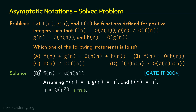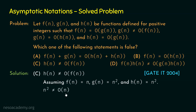Statement C: h(n) ≠ O(f(n)). Replacing f(n) = n and h(n) = n², we get n² ≠ O(n). This statement is absolutely correct — we know that n is O(n²) but n² is not O(n). So this inequality is true and statement C is not the correct answer.